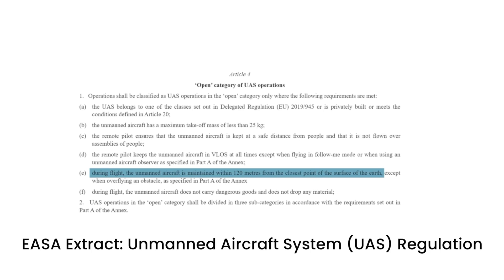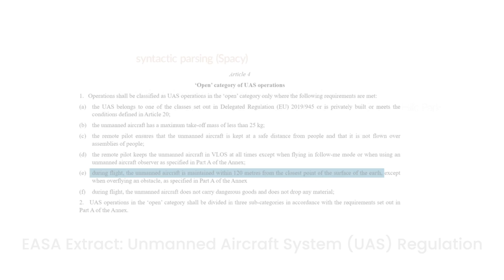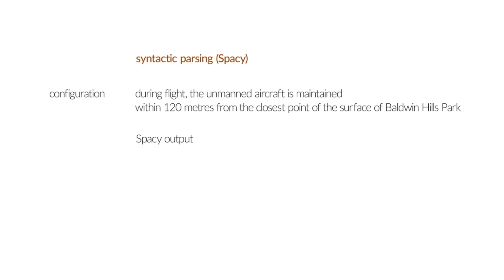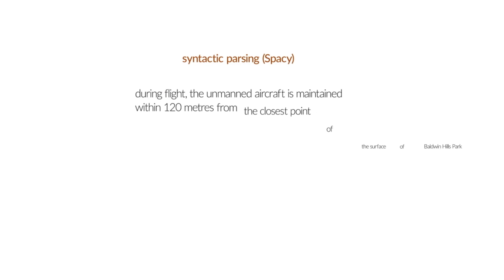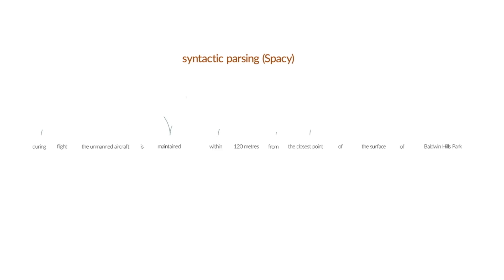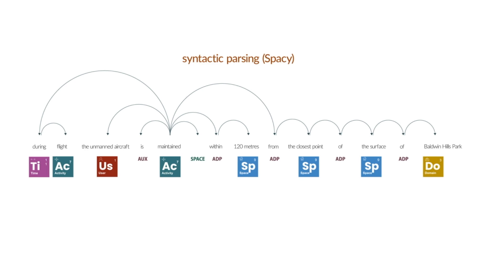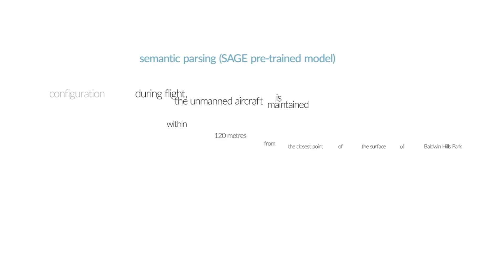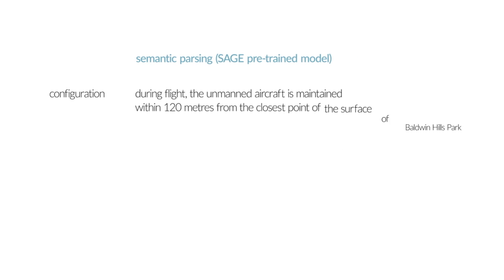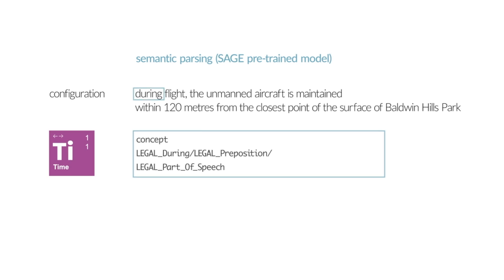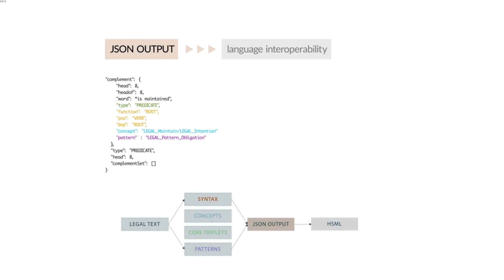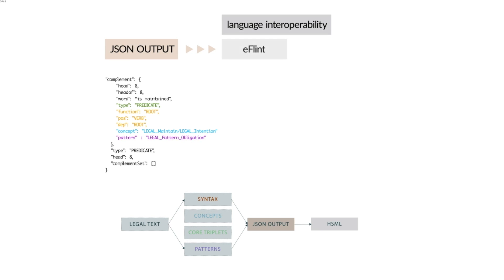This process begins with syntactic parsing and pattern recognition, which identifies time, activities, users, domains, and space in unstructured legal text. The HSML output, transmitted with HSTP, is what enables the AI system to direct the behavior of a drone in real time.